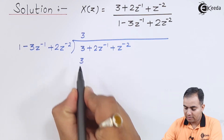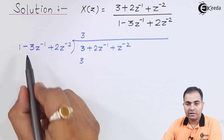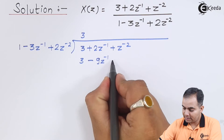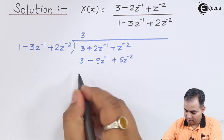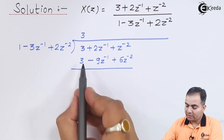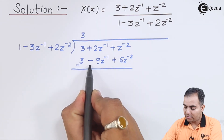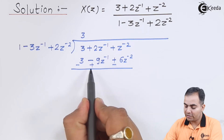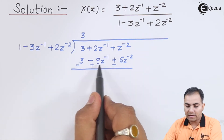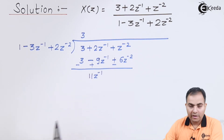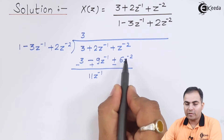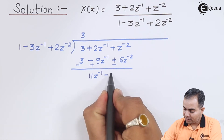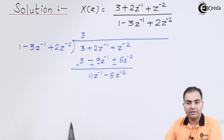3 times 1 is 3. Next, 3 times 3 is 9, so we write 9Z⁻¹. Last, 3 times 2 is 6, giving 6Z⁻². To subtract, we change the sign. These two terms cancel, and the 9Z⁻¹ term changes sign to plus. So 2Z⁻¹ plus 9Z⁻¹ gives 11Z⁻¹. The 6Z⁻² changes sign to minus, so minus 6Z⁻² plus Z⁻² gives minus 5Z⁻².